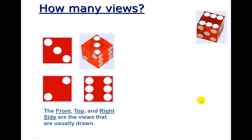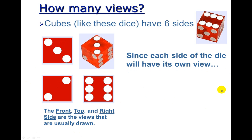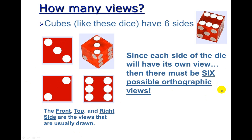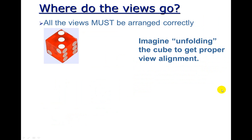So how many views are there? We keep talking about the front, the top, and the right. But if you look, cubes, just like a dice here, have six sides. Since each side of the die will have its own view, well then there must be six possible orthographic views. So all views must be arranged correctly. And so you imagine the cube if you fold it out to get that proper alignment.